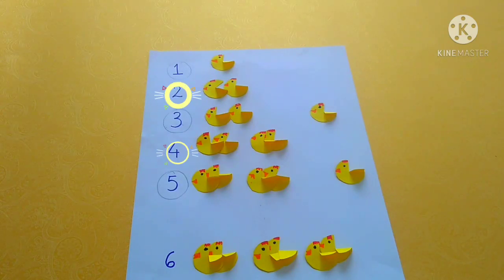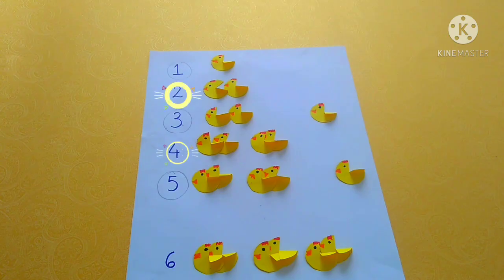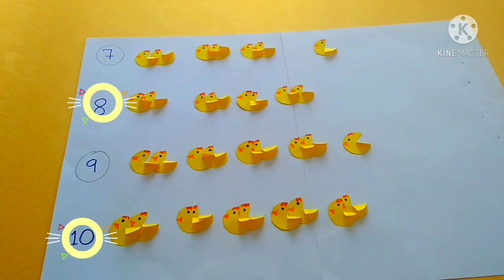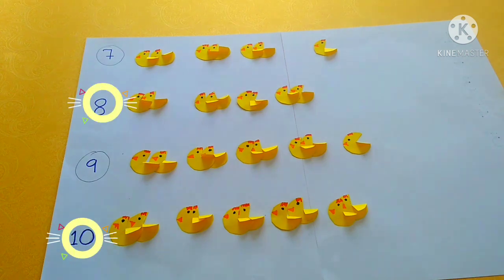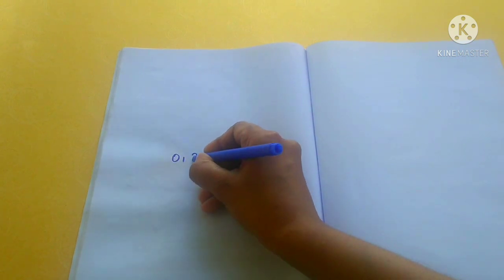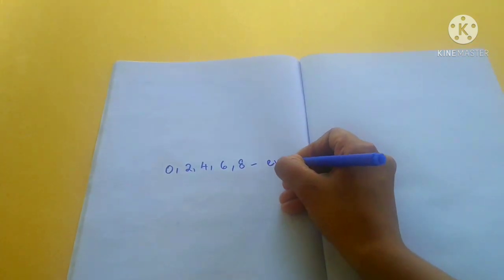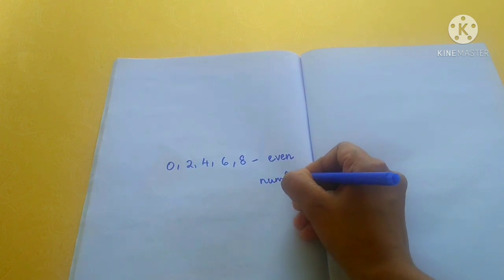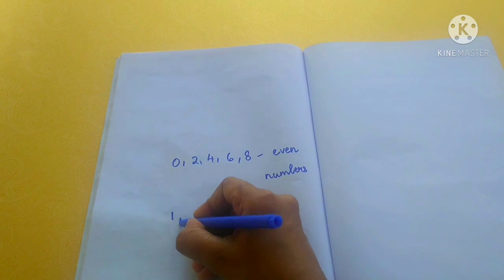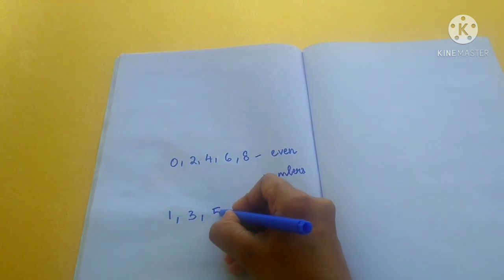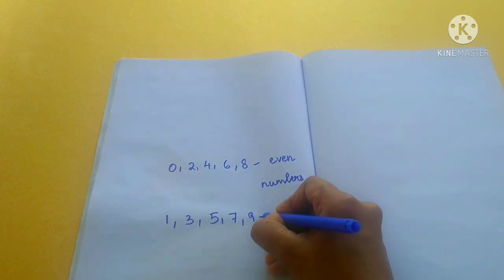The numbers 2, 4, 6, 8, and 10 — which are all in pairs — are even numbers. So, the digits 0, 2, 4, 6, and 8 are even, and the digits 1, 3, 5, 7, and 9 are odd numbers.